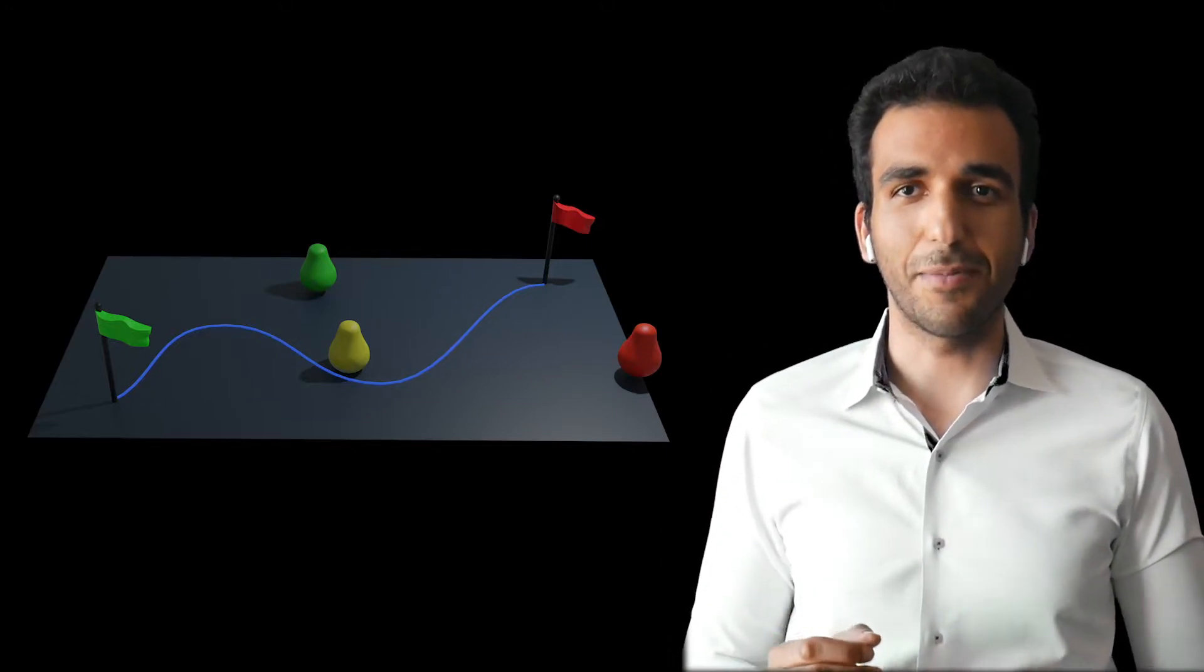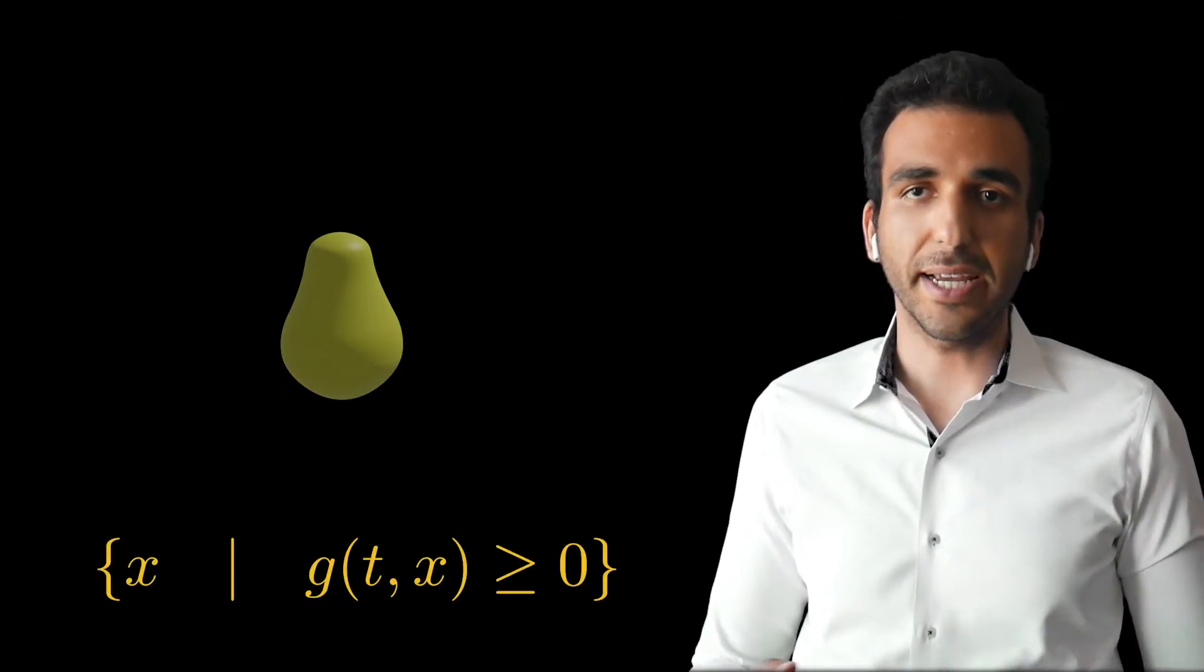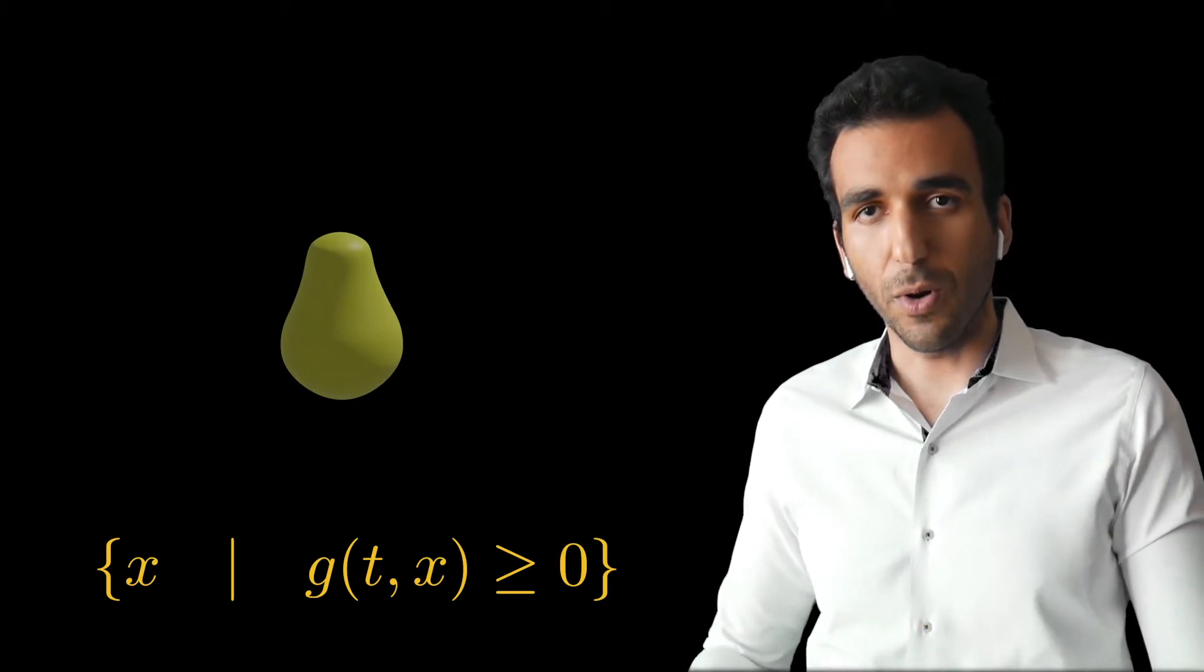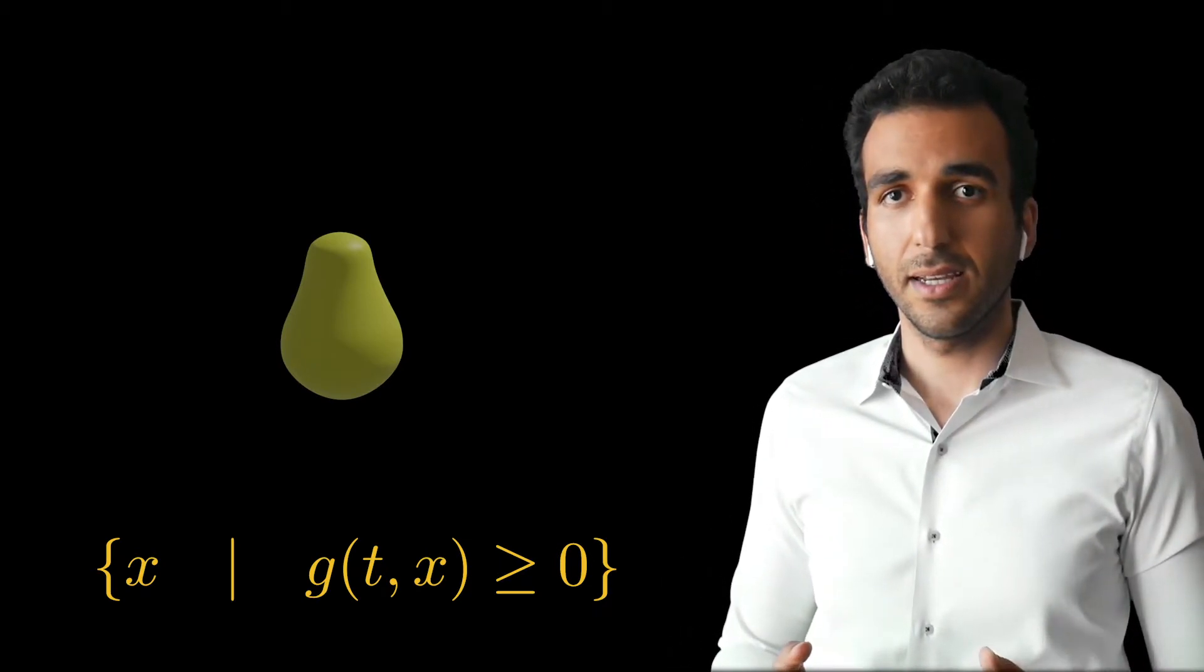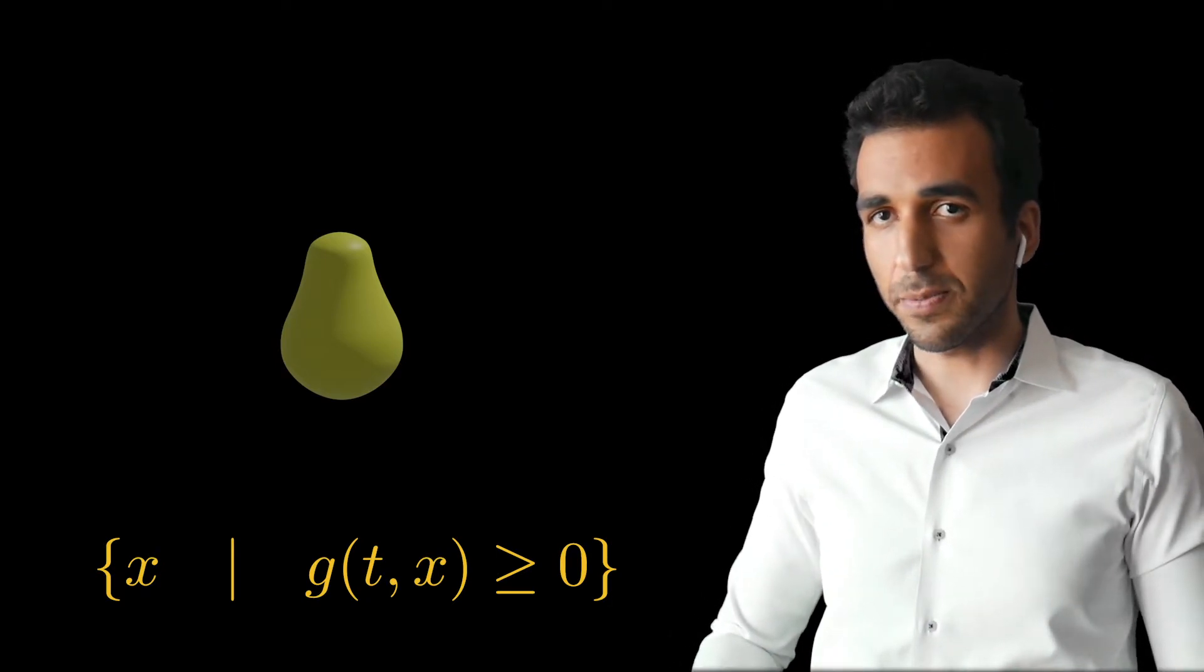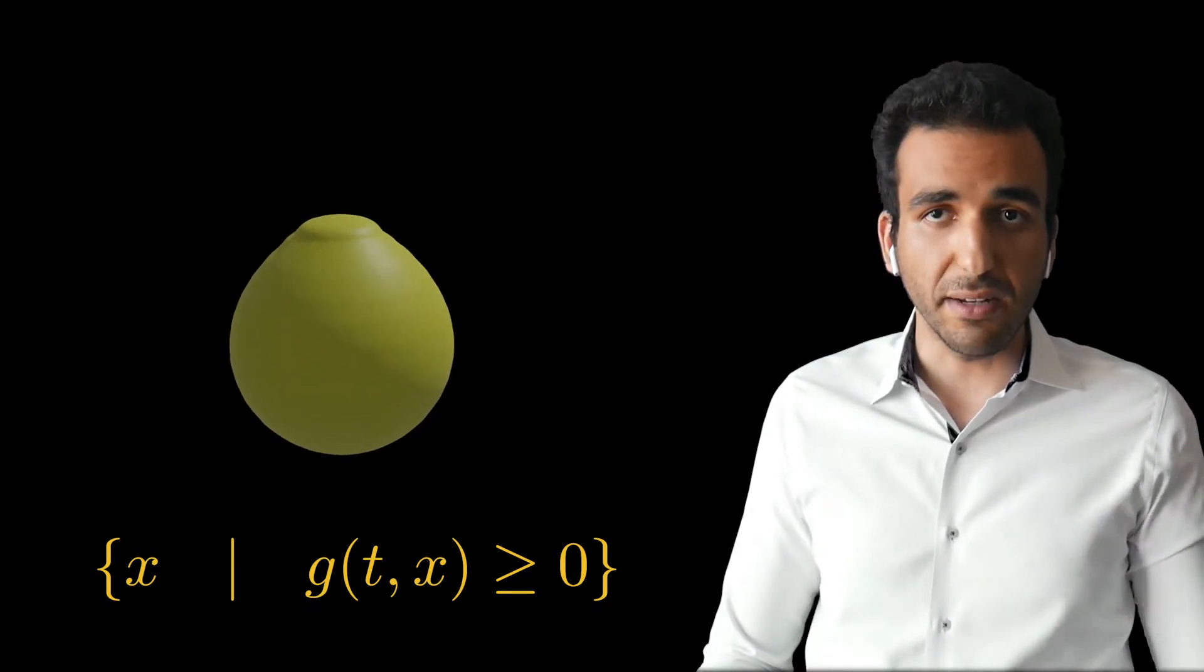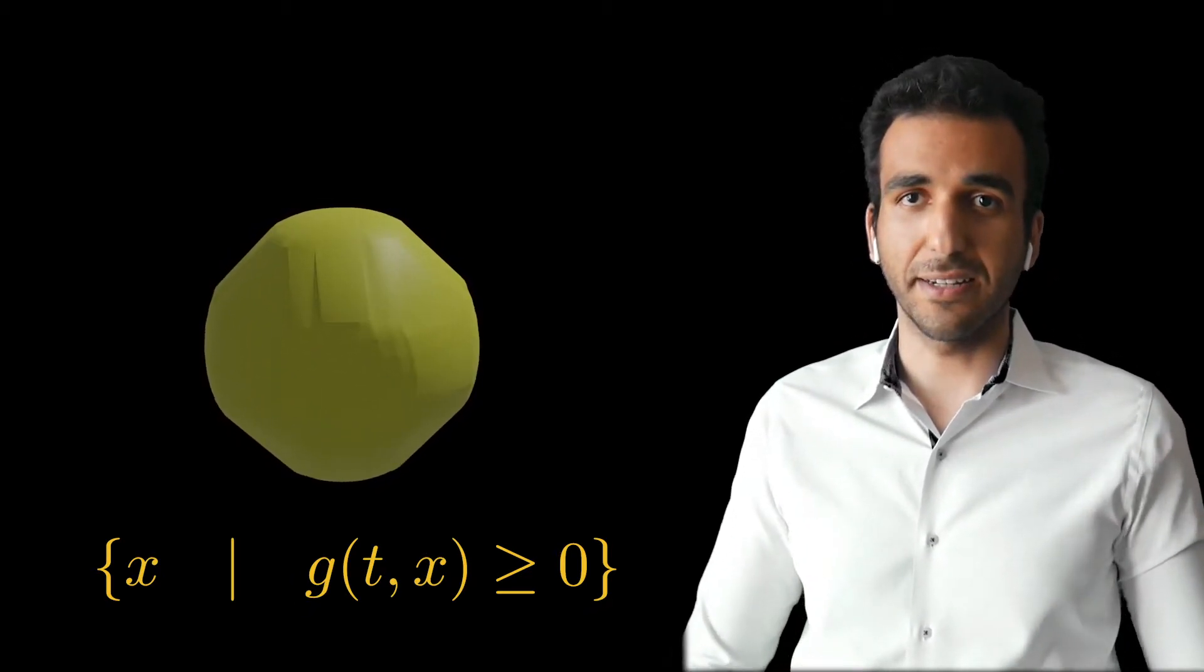Let's talk about these obstacles. We choose to model the obstacles with polynomial functions. More specifically, every obstacle is given by an inequality where g is a polynomial function in both time t and x. This framework is fairly general and allows us to express a wide variety of obstacles that could be moving, morphing, disappearing, etc.